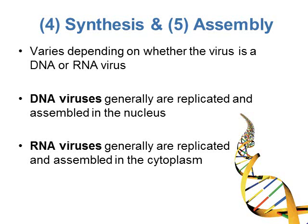For synthesis and assembly, the process varies depending on whether it's a DNA or RNA virus. A DNA virus is generally replicated and assembled in the nucleus of the host cell, whereas an RNA virus is generally replicated and assembled in the cytoplasm. So the type of genetic information influences what part of the cell the virus is synthesized and assembled in.